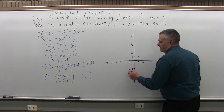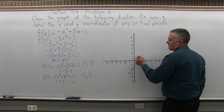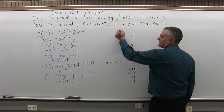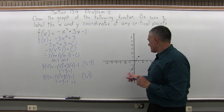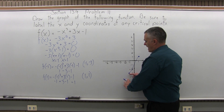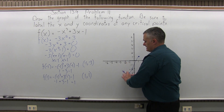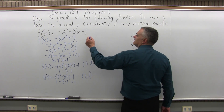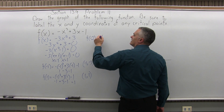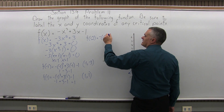You'll have one critical value at negative 1, negative 3. Now find the y that goes with positive 1. f of positive 1: negative 1 cubed plus 3 times 1 minus 1. 1 cubed is 1, with a negative in front, so minus 1. 3 times 1 is 3, and there's another minus 1. So minus 1 and minus 1 is minus 2, and 3 minus 2 is positive 1. So the critical value at x equals positive 1 has y equals positive 1.